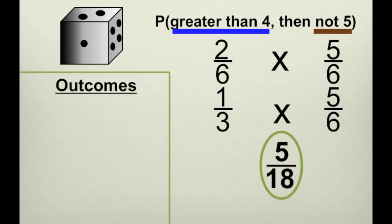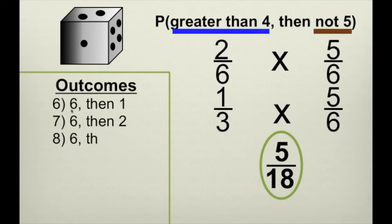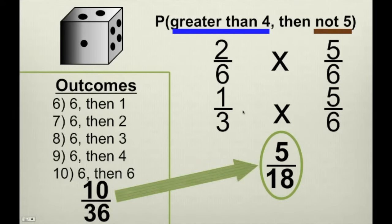Let me show you why the probability is five-eighteenths. The first outcome must be greater than four, and the second must be any number that's not five. The outcomes are: five-one, five-two, five-three, five-four, five-six, six-one, six-two, six-three, six-four, and six-six. That is ten outcomes out of thirty-six total. Ten over thirty-six reduces to five-eighteenths, so our probability is five-eighteenths.